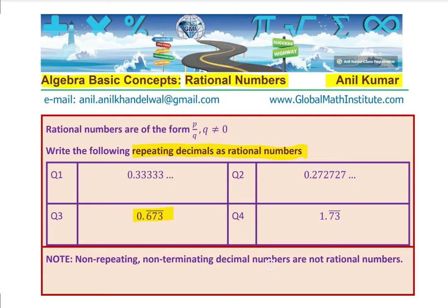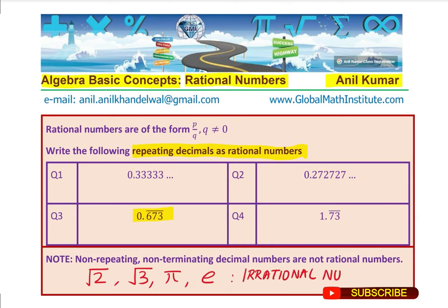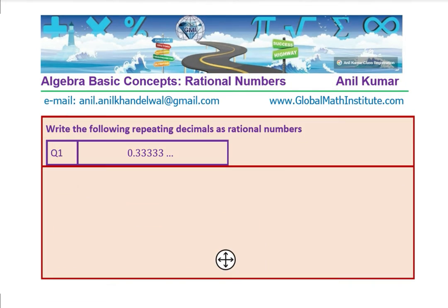Non-repeating, non-terminating decimal numbers are not rational numbers. Square root of 2, all radicals which are not of perfect squares, they are not rational numbers. The number pi, e, these numbers are irrational since they cannot be written in the form of P over Q. Now, let us see how do we write these numbers in the form of P over Q, beginning with question number 1.